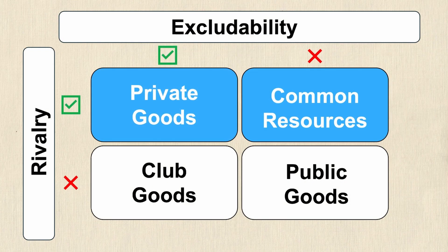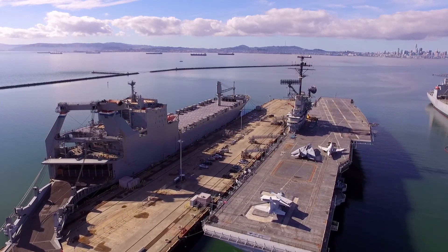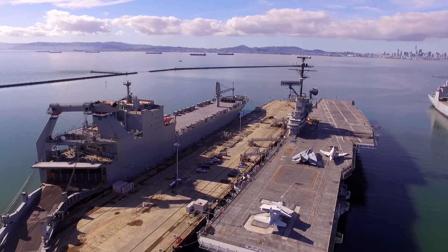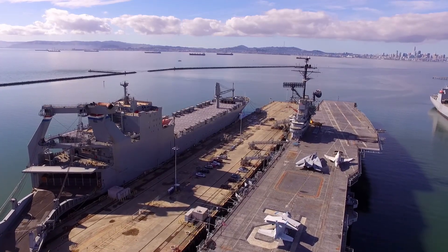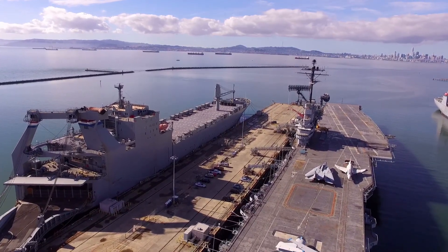Let's take a look at the next type which is public goods. Public goods are not excludable and they're not rivalrous, meaning anybody can use them and one person using them does not prevent another person from using the same good. Some examples include national defense — the ability to be safe in your country is not excludable to anyone in the country, and if I'm safe in my country, that doesn't prevent someone else from being safe.